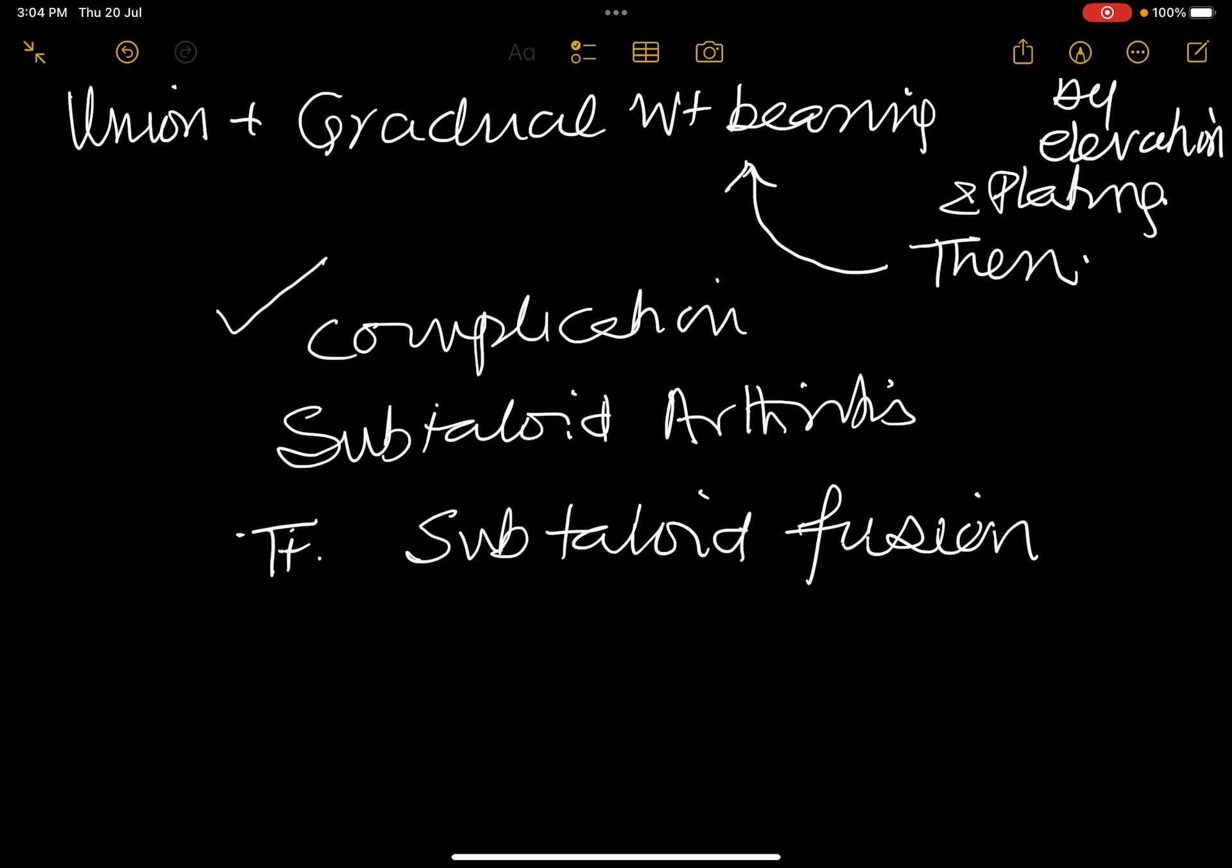Axial pinning is that if the calcaneum is like this, you will pin it, you will correct the rotation, you will bring it in the correct cruciate angle and you will advance the pin into the anterior part of the calcaneum, anterior part of the fractured calcaneum. So this is called axial pinning.